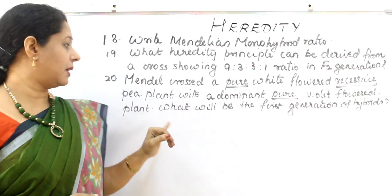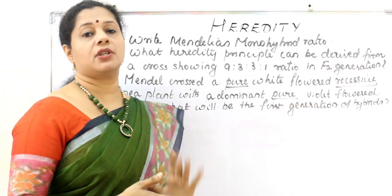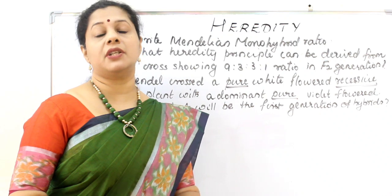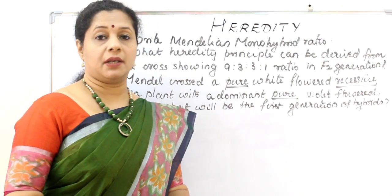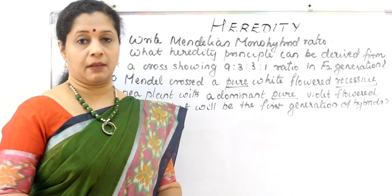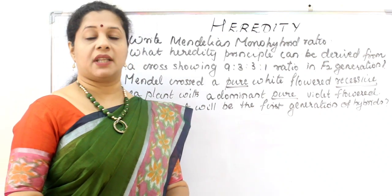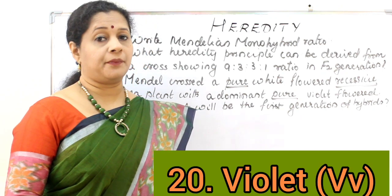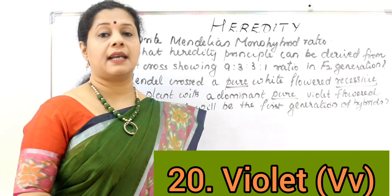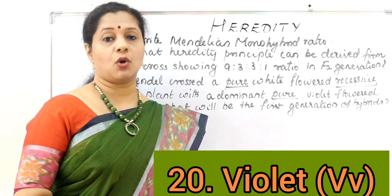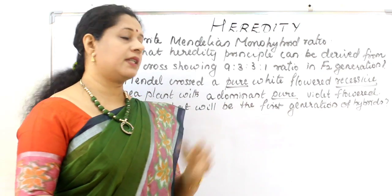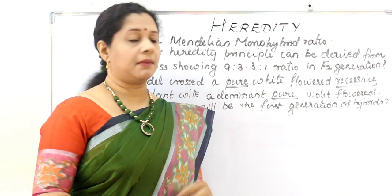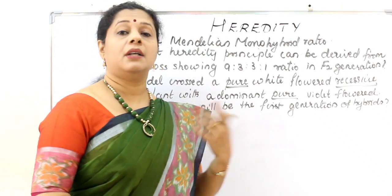What will be the first generation hybrid? The first generation will show the dominant character. The answer is violet. The genotype is heterozygous — you can write it as capital V small v or capital W small w.